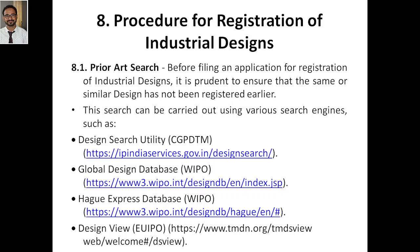In every step of registration — whether copyright, patent, trademark, or design — there is one common thing: the first thing you have to do is a prior art search. You have to find whether whatever you are going to register is already available in the public domain or not.